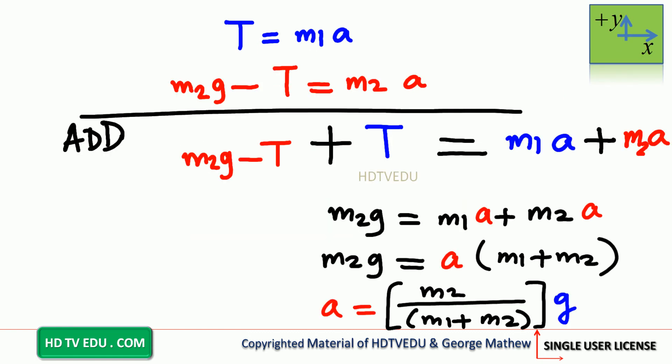For those who want to go further, here is the full math. T equals M1a; M2g minus T equals M2a. Adding both equations, M2g minus T plus T equals M1a plus M2a, so M2g equals M1a plus M2a. Factor out A: M2g equals A times (M1 plus M2). Dividing both sides by (M1 plus M2), acceleration A equals M2 divided by (M1 plus M2) times g.